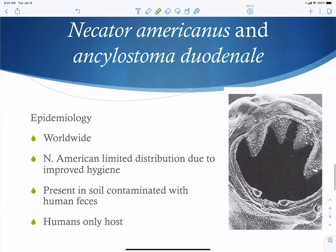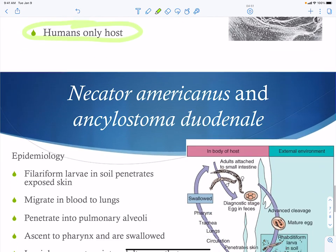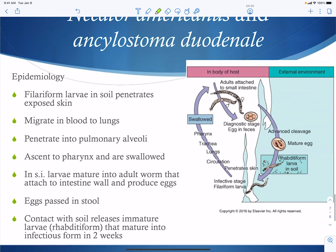Next we have our hookworms, Necator americanus and Ancylostoma duodenale. These are found worldwide. North America has a limited distribution due to improved hygiene — this used to be very common in farm children who ran around in soil and acquired it that way. Wearing shoes essentially made Necator americanus go away in the United States. These are found in soil contaminated with human feces, and humans are the only host. The hookworms have what's called a filariform larva, which penetrates exposed skin, burrowing its way into the body.